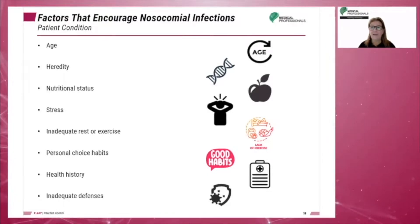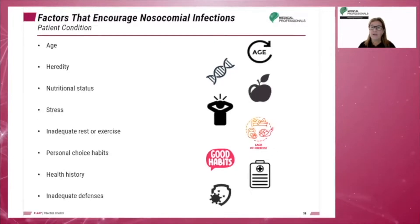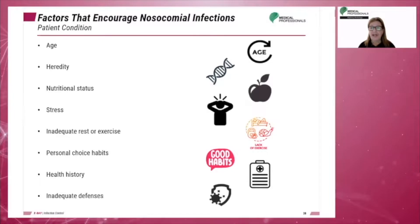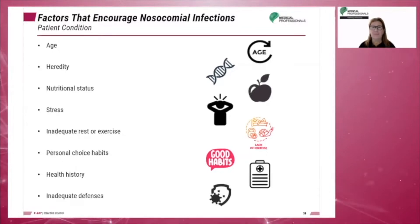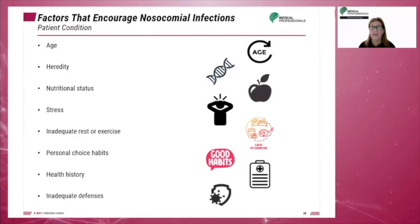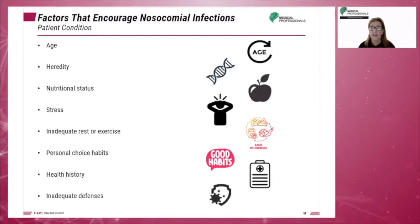Heredity: some infections are more common within genetic groups. The patient may have inherited genetic factors or a disease that makes them more likely to get an infection. Nutritional status: a poor diet can result in a compromised immune system. Stress puts pressure on the immune system and can result in an increased risk of infections. Inadequate rest or exercise can also compromise the immune system.